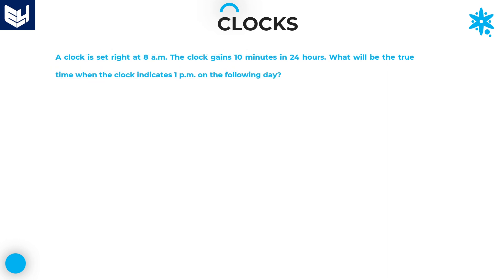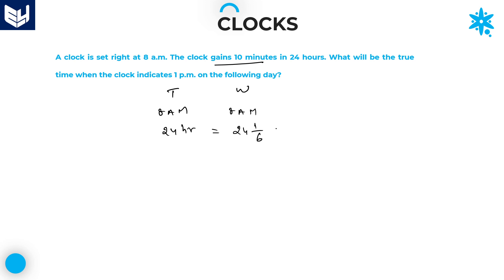Let's move on to the next question — this is the last question in the clocks topic. A clock is set right at 8 AM. The clock gains 10 minutes in 24 hours. If the true time is 24 hours, then the wrong time will be 24 hours plus 10 minutes. Converting 10 minutes: 10 by 60 equals 1 by 6 hours. So it will be 144 plus 1 over 6, which is 145 by 6 hours. When the true time shows 24 hours, the wrong time is 145 by 6 hours.